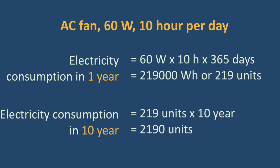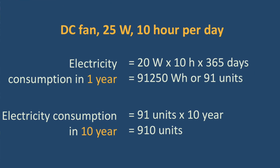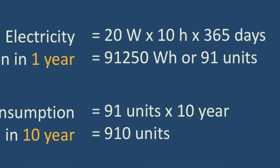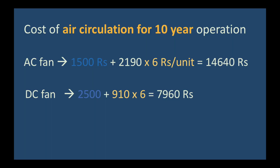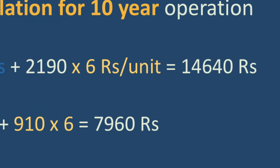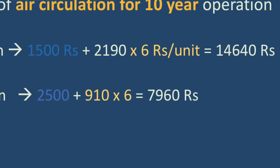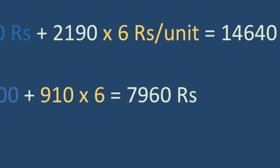The AC fan consumes 219 units per year and 2,190 units over 10 years. The DC fan consumes 91 units per year and 910 units over 10 years. For total operational cost: the AC fan has a fixed cost of 1,500 rupees, and at 6 rupees per unit the running cost is 2,190 × 6 = 13,140 rupees, giving a total of 14,940 rupees over 10 years. The DC fan has a fixed cost of 2,500 rupees and a running cost of 910 × 6 = 5,460 rupees, giving a total of 7,960 rupees over 10 years.